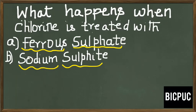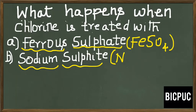What is the formula of ferrous sulfate? FeSO4 is the formula of ferrous sulfate. Then sodium sulfite, Na2SO3.